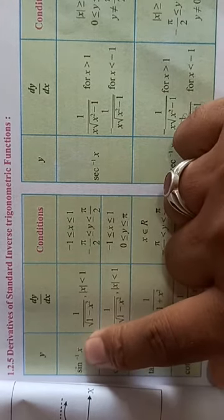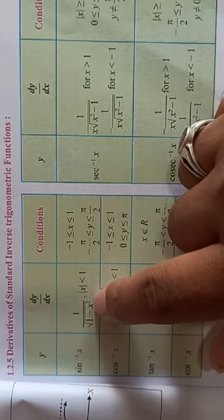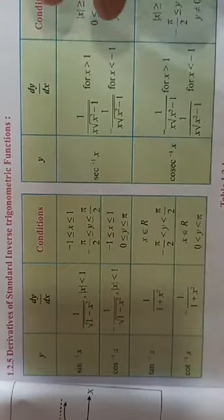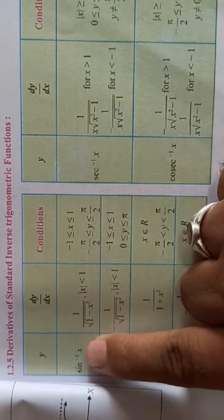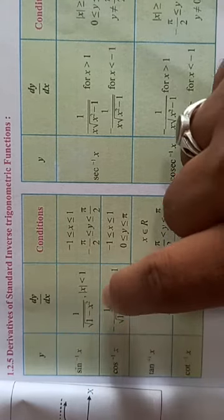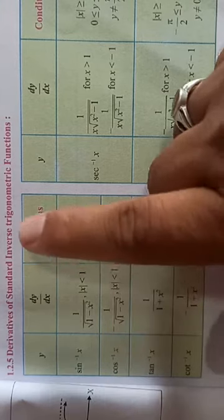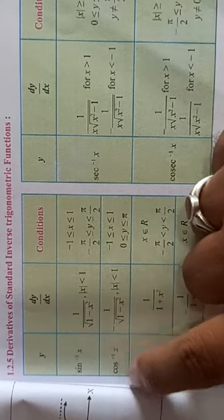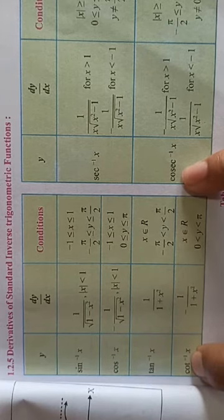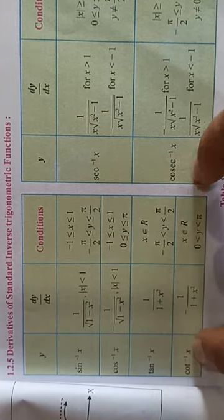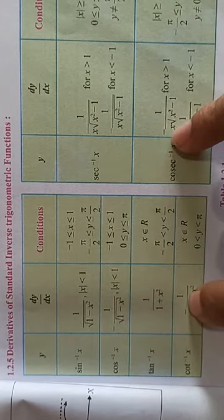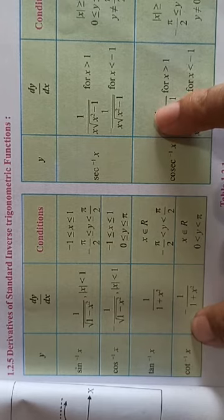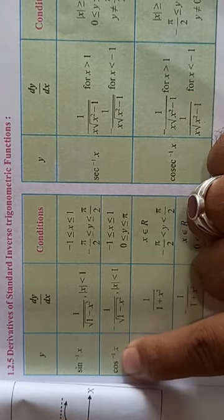So look, the derivative of sin inverse x is equal to 1 upon root 1 minus x square. These two are in one group. The difference between sin inverse and cos inverse - in these two, only the sign changes. Where there is cos, the derivative's answer has a negative sign.